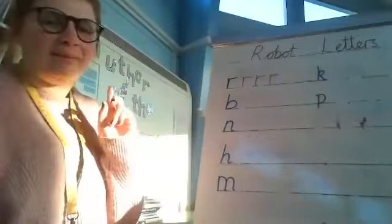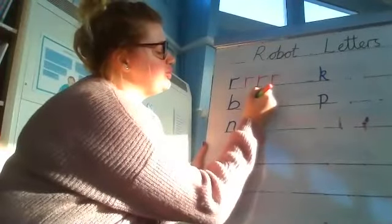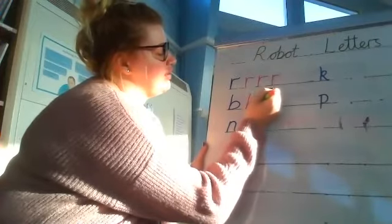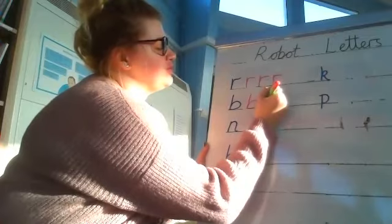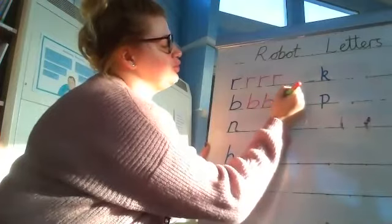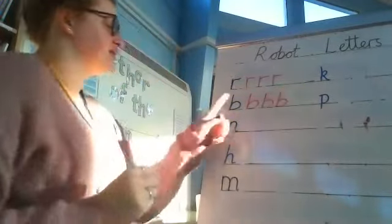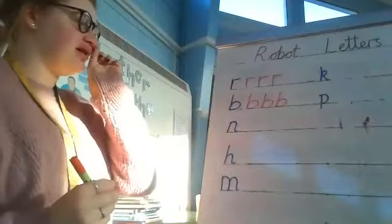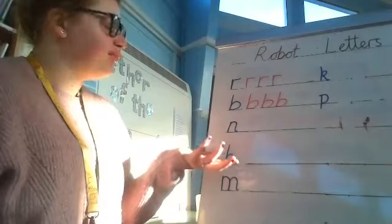So our next one is our B. So we're going to go down the boot to the heel and round the toes. Down the boot to the heel and round the toes. Down the boot to the heel and round the toes. And then again, three times. So it looks lovely. And that's our B sound.